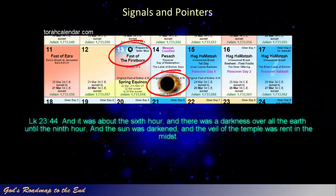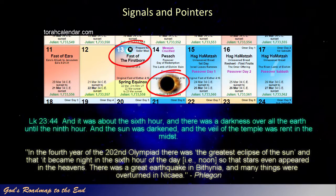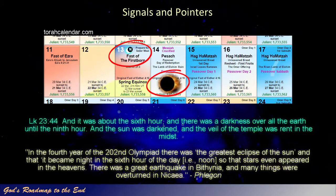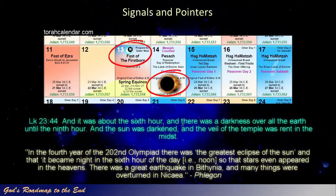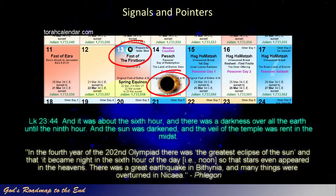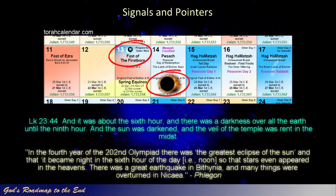This is what the Greek historian Phlegon wrote: In the fourth year of the 202nd Olympiad, there was the greatest eclipse of the sun, and that it became night in the sixth hour of the day, so that stars even appeared in the heavens. There was a great earthquake in Bithynia, and many things were overturned in Nicaea.